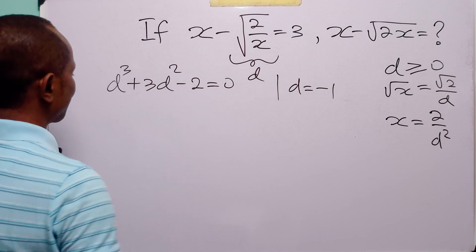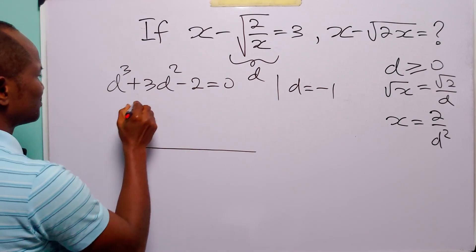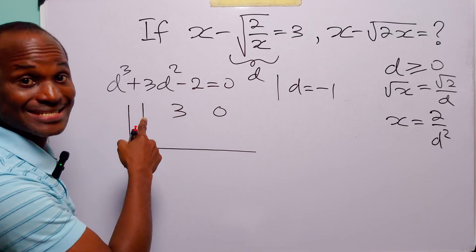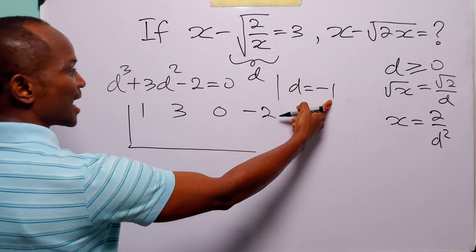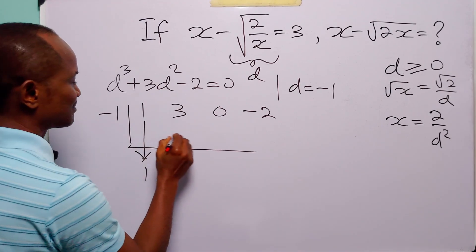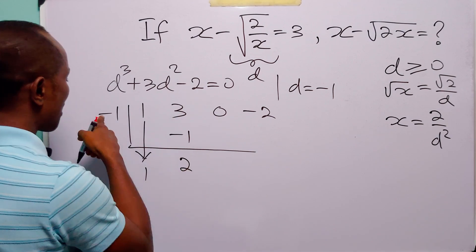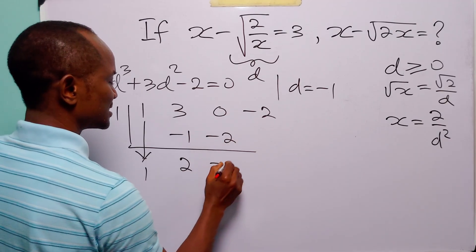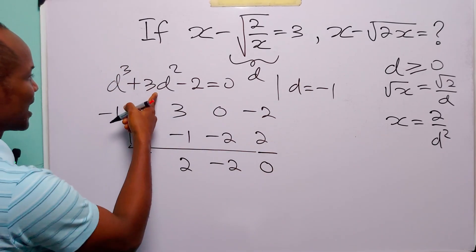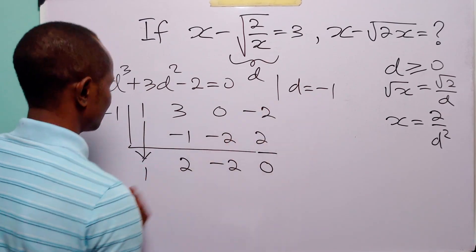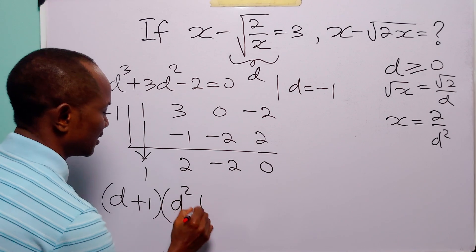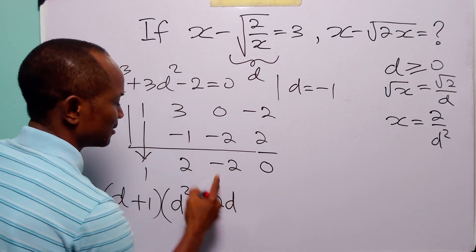We are going to use the synthetic division method. The coefficient of d cubed is 1, the coefficient of d squared is 3, the coefficient of d is 0 (since there is no d term), and the constant term is minus 2. We are dividing by minus 1. Bringing down the 1: minus 1 times 1 is minus 1; 3 minus 1 is 2; minus 1 times 2 is minus 2; 0 minus 2 is minus 2; minus 1 times minus 2 is 2; minus 2 plus 2 is 0. So the cubic factors as (d + 1)(d² + 2d − 2) = 0.